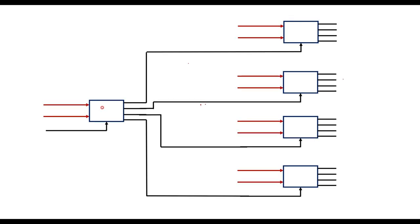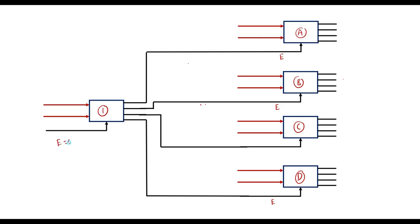Let me assume this is decoder 1, and these are decoders A, B, C, and D. Each decoder has an enable line. If the enable line is 0, the decoder is inactive, so the enable line must be 1. If E equals 1, the decoder will be active. The first decoder will be used to select any one of the 4 decoders A, B, C, or D.